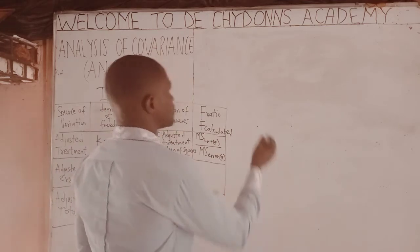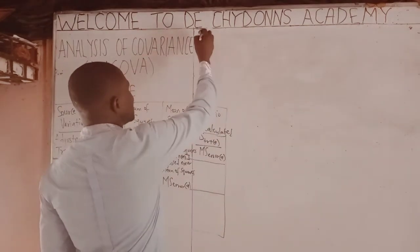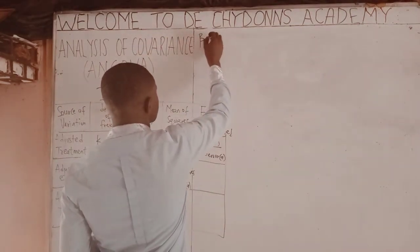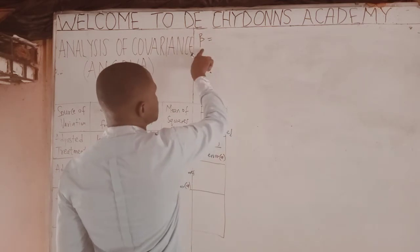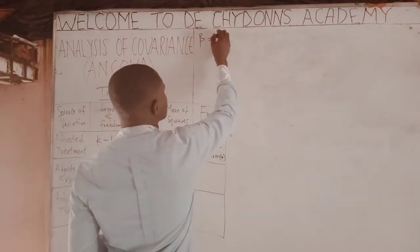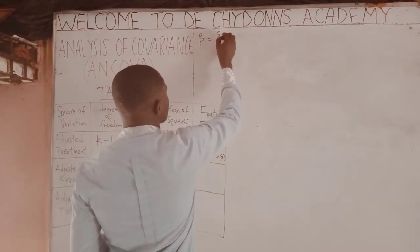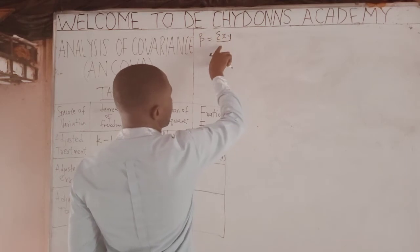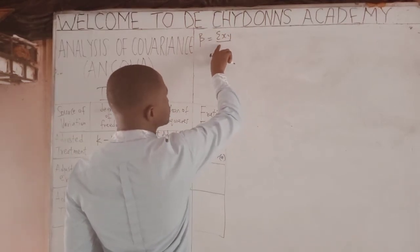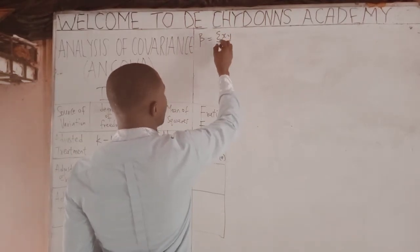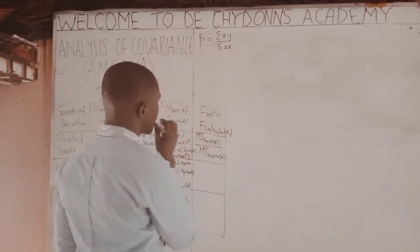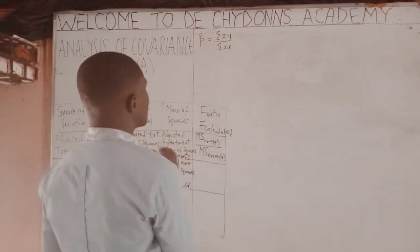The first formula we need to know is that the regression coefficient is equal to the summation of XY over the summation of XX.